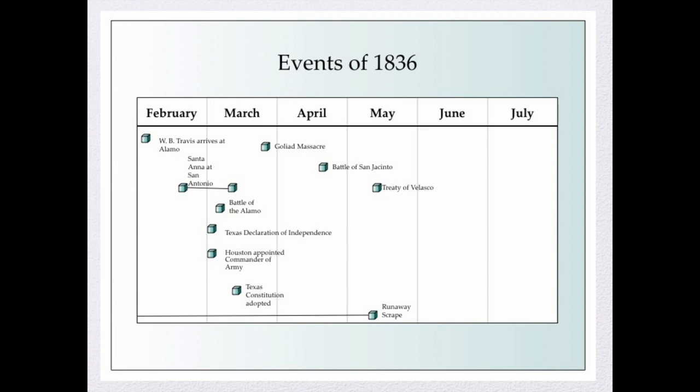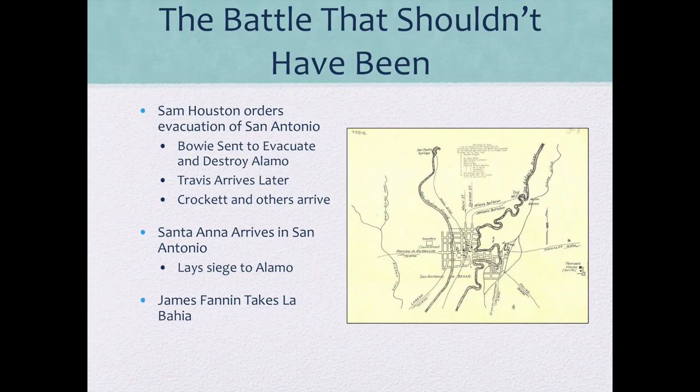Houston was appointed commander of the army, and the Texas Constitution was adopted. Finally, the fighting ended at the Battle of San Jacinto, just to the east of Houston where the San Jacinto River and Buffalo Bayou come together. Afterwards there were the Treaties of Velasco — actually two treaties — and the Runaway Scrape came to an end.